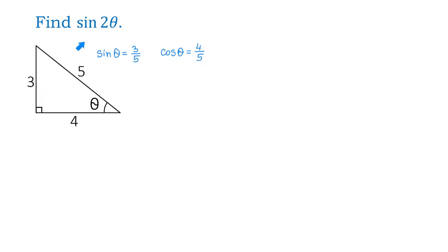Now, what about sine of 2 theta? With the first method, we will find sine of 2 theta using the formula for the double angle. This formula is sine of 2 theta equals 2 times sine of theta times cosine of theta.